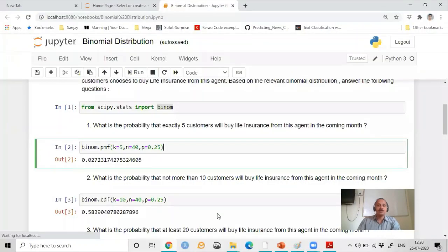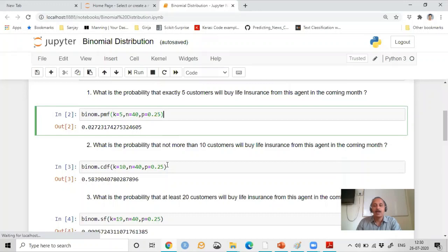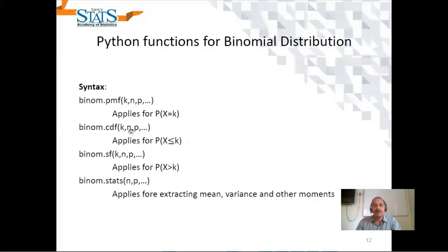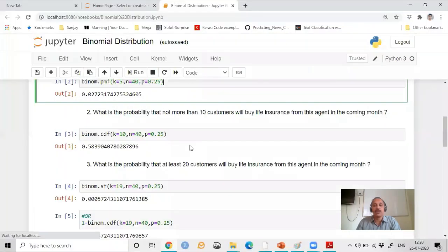Coming back to the Python notebook. We want to find the probability that at most 10 customers buy life insurance from this agent. For this scenario, we want the probability X less than or equal to K. So we use CDF, and we get the answer.